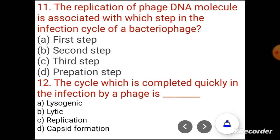Question 11. The replication of phage DNA molecule is associated with which step in the infection cycle of bacterial phage? Options: first step, second step, third step, or preparation step. The correct answer is the second step.